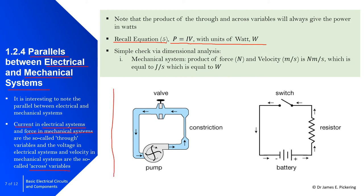Here are schematics comparing an electrical system and its mechanical analogy. The battery (source) creates a potential difference; current flows through the resistor when the switch is closed. In the equivalent mechanical system, the pump creates the potential difference, a narrowing of the pipe is equivalent to the resistor, a valve acts like the switch, and the water flow is analogous to current.